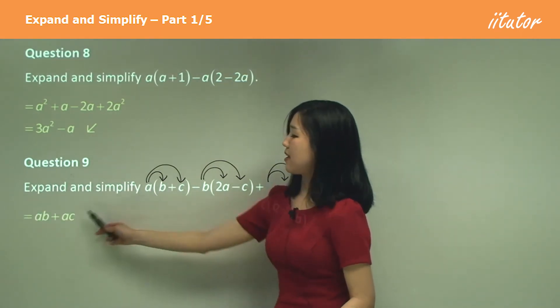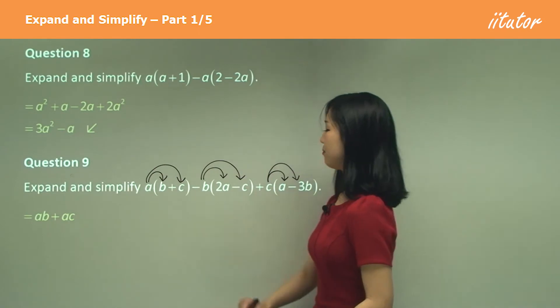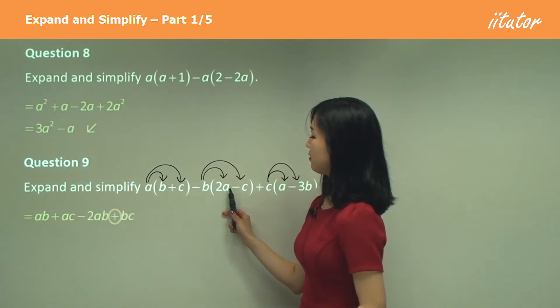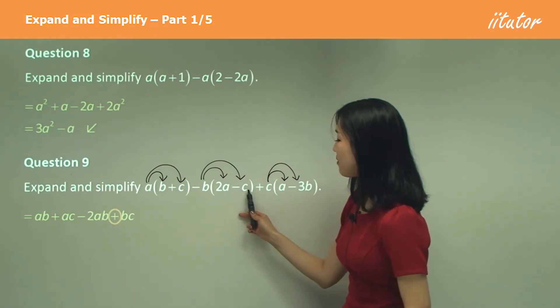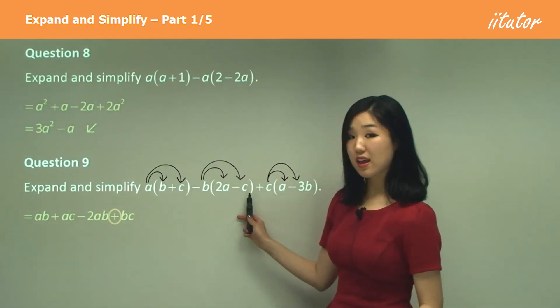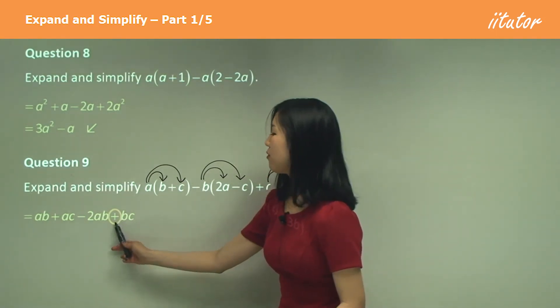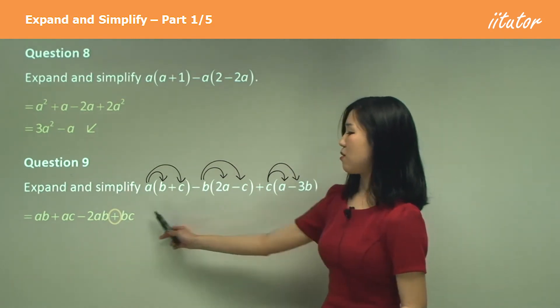So a times c is ac, easy. Now negative b times 2a, that's negative 2ab, but again see how I circled that negative b times negative c. Negative negative makes a positive. So positive b times c which is just bc.